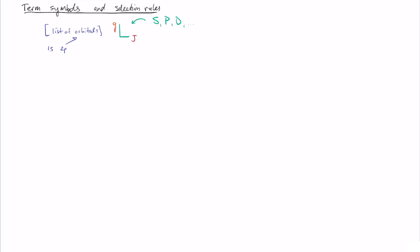Next, in the lower right corner of the symbol — as a subscript to the right of the letter — we write the J quantum number. And then finally, as a superscript preceding the letter, we have the spin multiplicity.